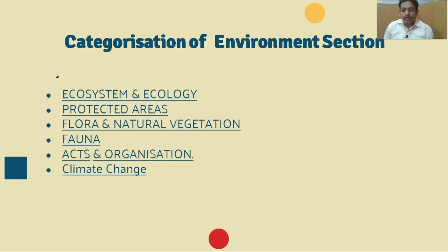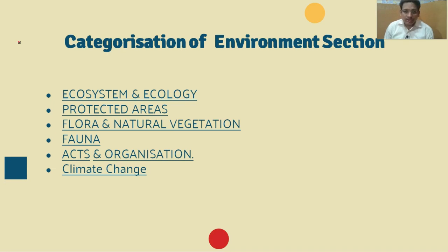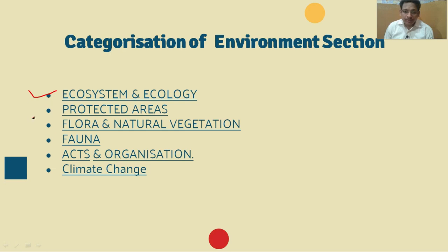The major question asked by many of us is how to prepare for the environment section. I would say we can categorize the environment section into six major parts for our own benefit, to understand each terminology more easily. The first part is ecosystem and ecology — what is ecosystem and ecology, how they are impacting our society, and how human activities are impacting the ecosystem.